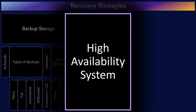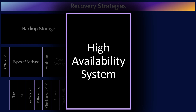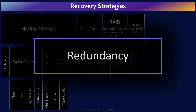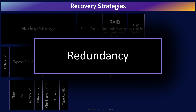High availability systems means we want a system that doesn't go down in the event of a failure — we want redundancy at the system level. We can achieve high availability through clustering and redundancy. Clustering means we have multiple systems working together simultaneously to support workload — think a cluster of web servers behind a load balancer. If one of the members of the cluster goes down, the cluster is still running but at reduced capacity. Redundancy means there are multiple systems — a primary and one or more secondary systems. These systems are not working together; rather, the primary is doing all the work, and if it fails, the secondary system will take over to fully support the workload.